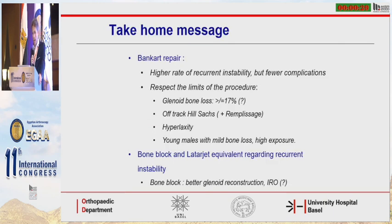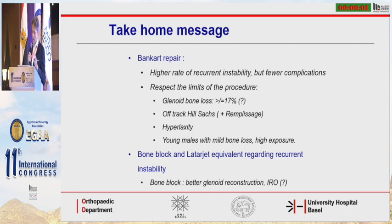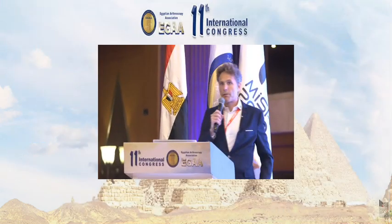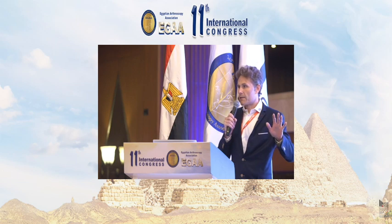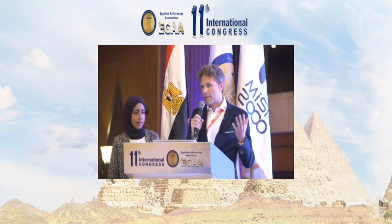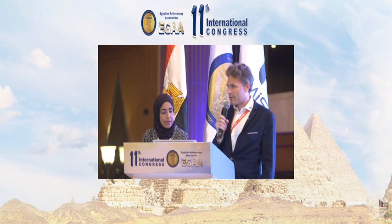To sum up: the Bankart repair is still a good procedure in anterior shoulder instability. It has a higher rate of recurrent instability, but in selected patients it might still work and it has fewer complications. We should respect the limits of the procedure — probably around 17% bone loss. Hyperlaxity and off-track Hill-Sachs are problems. For a young male, even with mild bone loss, I would go for a Latarjet. As for the bone block procedures, there are no significant differences between them, but the bone block can better reconstruct the glenoid surface compared to the Latarjet.